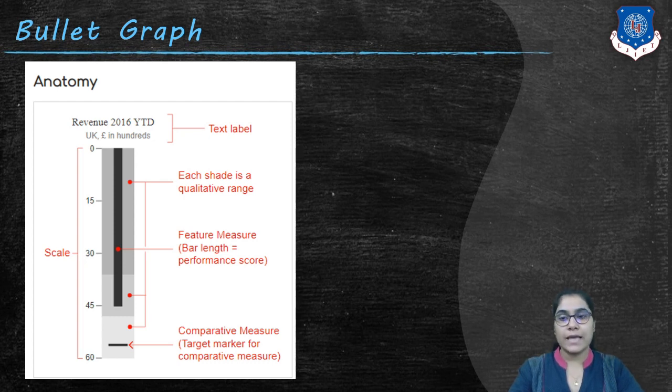Now our bullet graph is segmented in 3 different shades of grey. These grey colors can be labeled as poor, average, and excellent. And the number on the side of the bullet graph shows the scale.